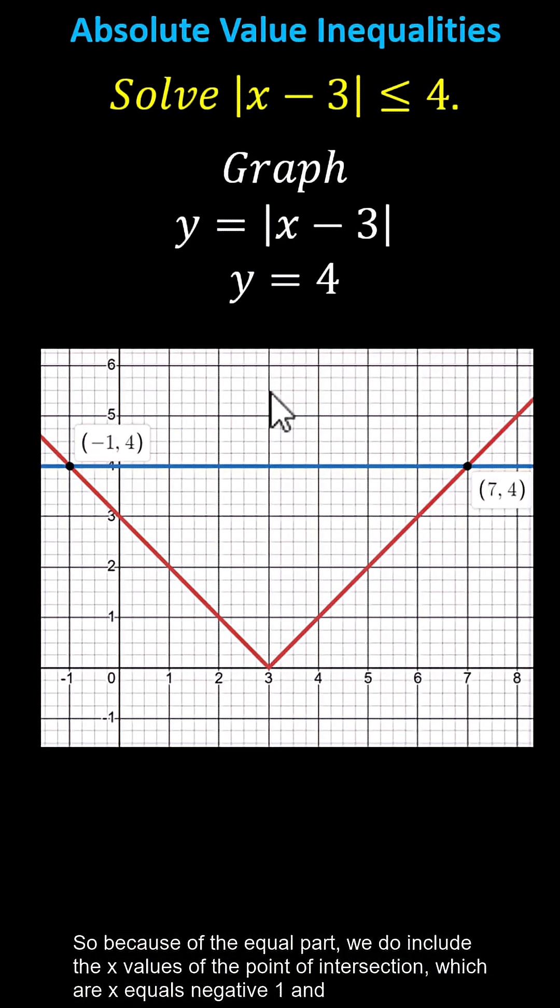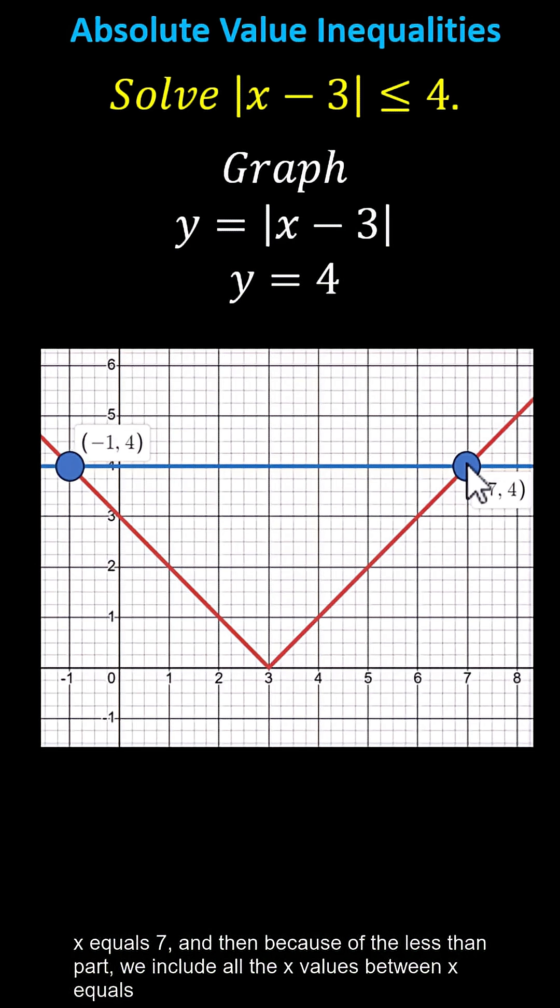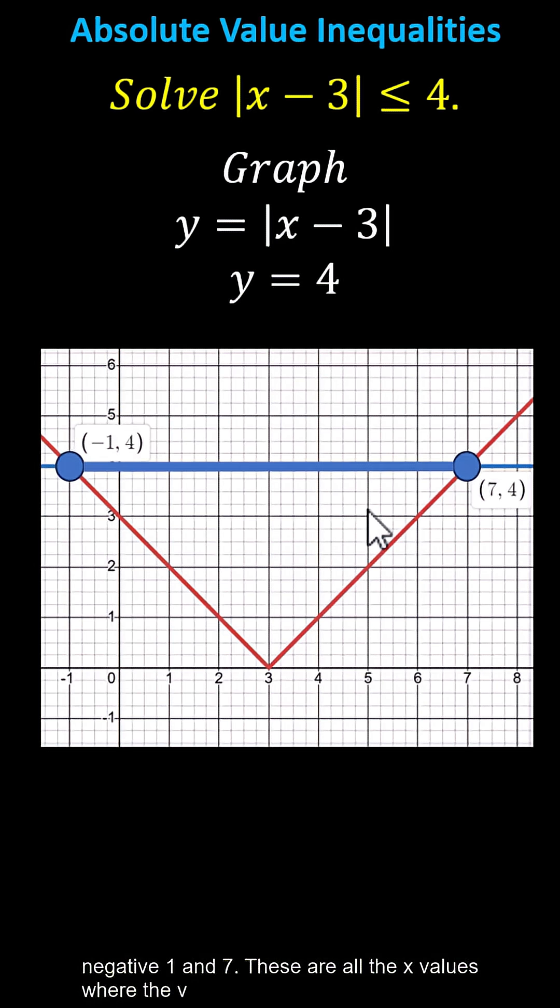Because of the equal part, we include the x values of the points of intersection, which are x equals negative 1 and x equals 7. And because of the less than part, we include all the x values between x equals negative 1 and 7.